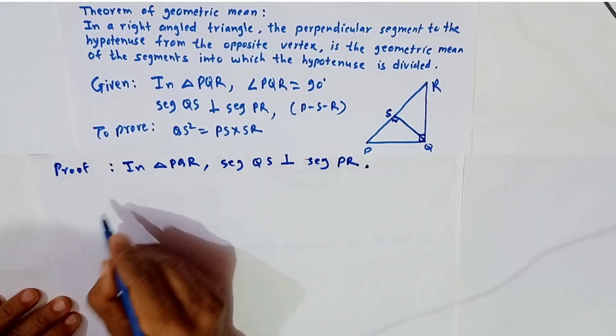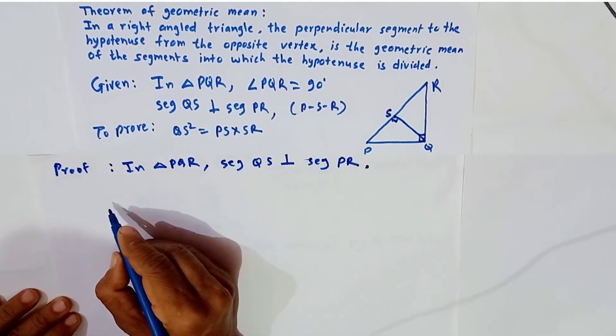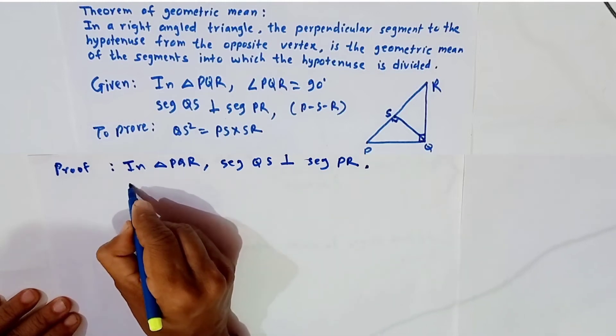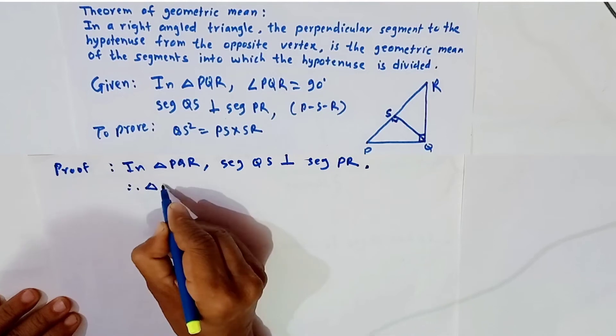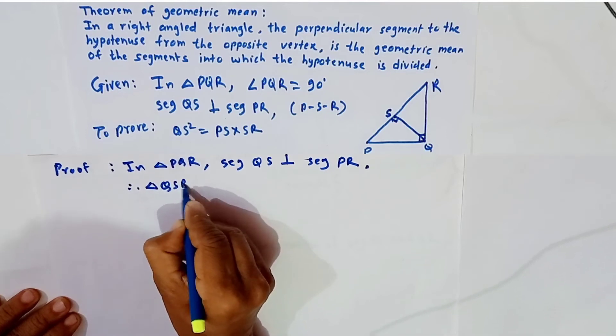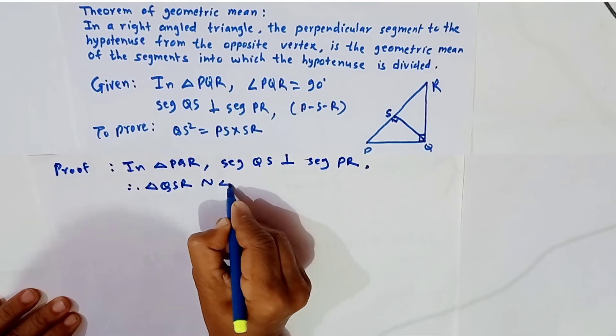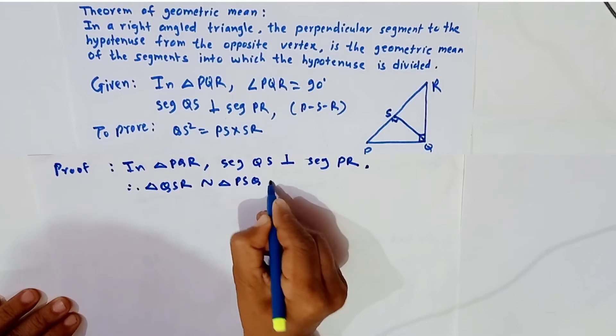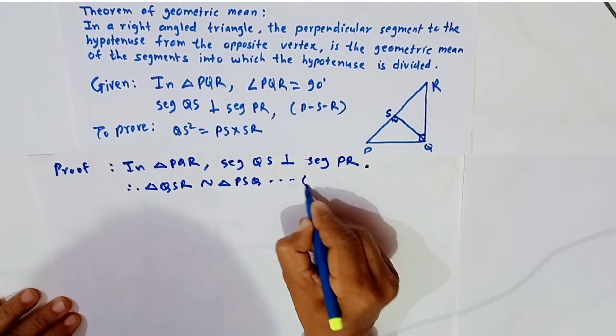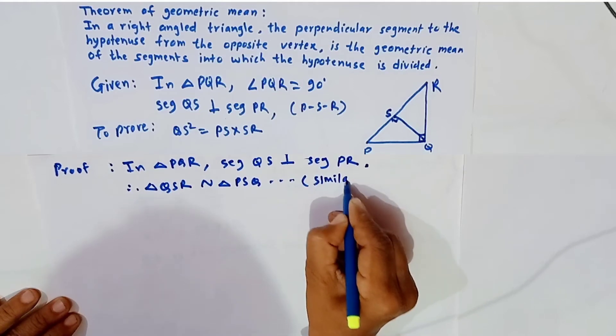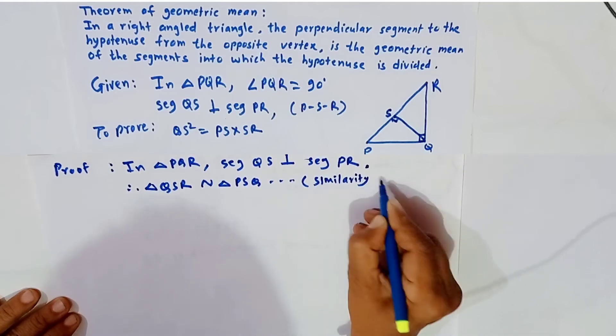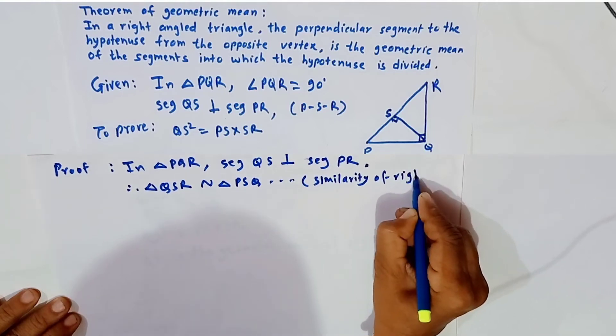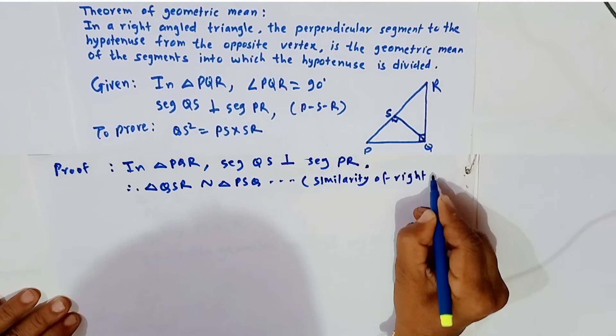And therefore by the property of similarity of right-angled triangles, we can write triangle QSR similar to triangle PSQ, by similarity of right triangles.